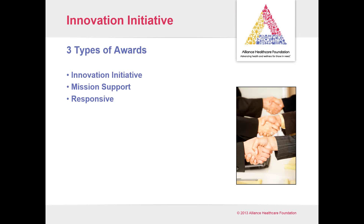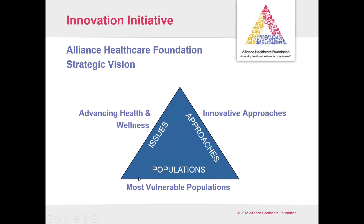But most of our time today is going to focus on the Innovation Initiative. In our strategic vision, we're looking to advance health and wellness — most everybody knows that in terms of our mission — using innovative approaches that serve the most vulnerable populations. For us, the most vulnerable populations span four target areas: those under 250 percent of poverty, the uninsured and underinsured, the homeless, and children. Although we don't target specifically the homeless or children exclusively, we want to make sure our dollars are reaching those populations.